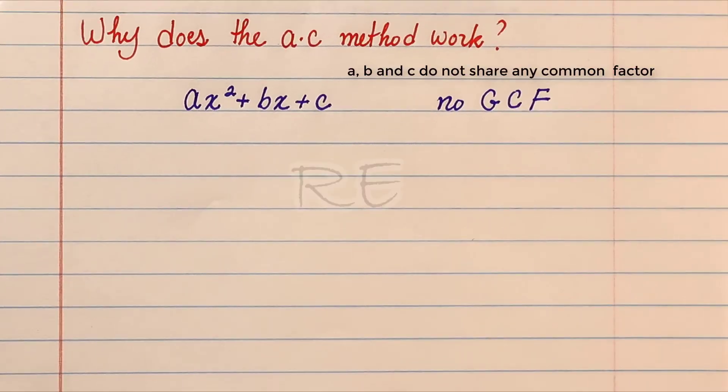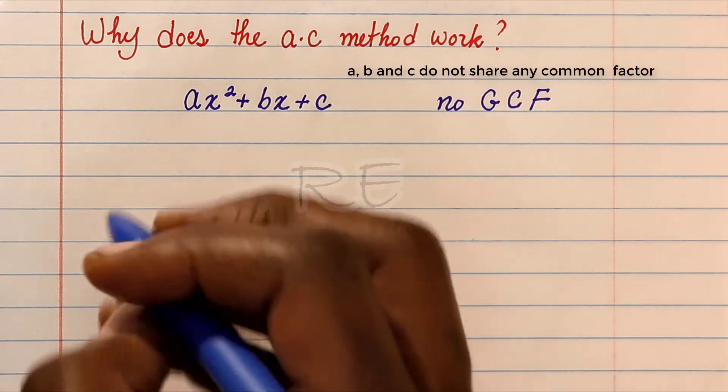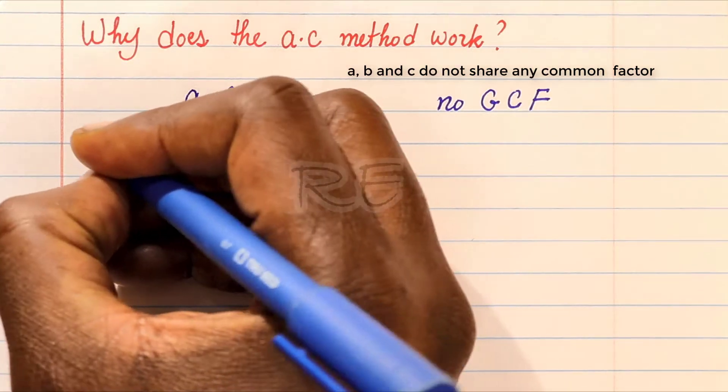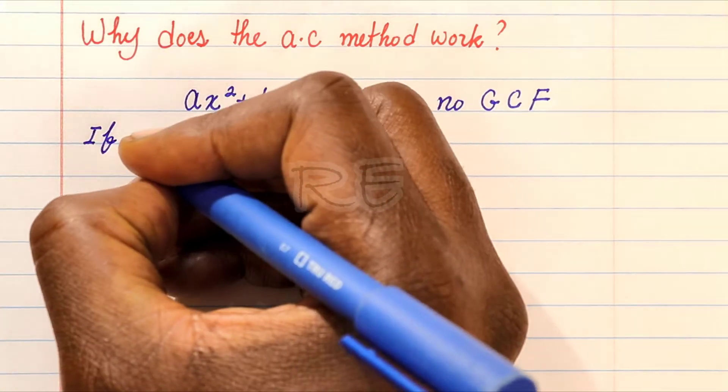If we have ax squared plus bx plus c, where a, b, and c do not share any common factor, no GCF.